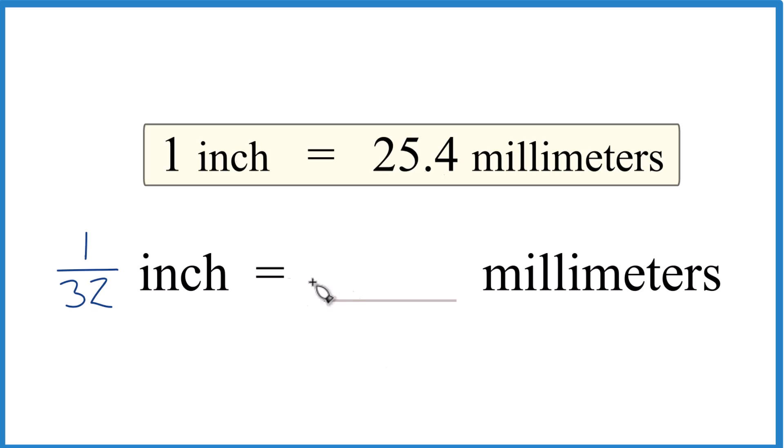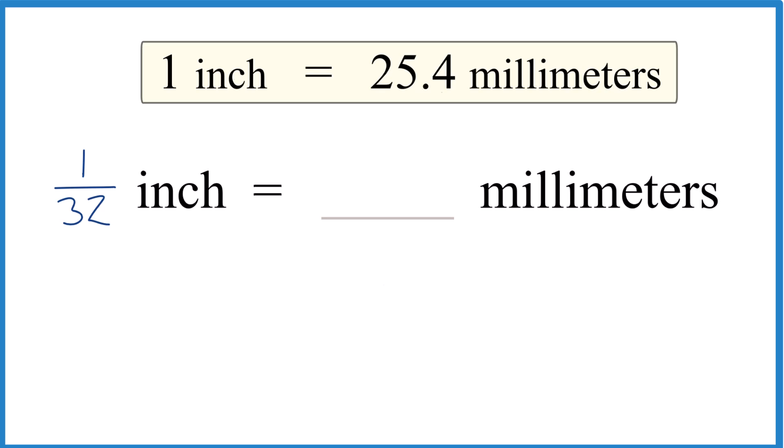But in this case, let's actually just do the conversion because we know 1 inch is 25.4 millimeters. So since this is 1/32 of an inch, it's really small, we're going to have an answer much smaller than 25.4 millimeters. So it turns out that 1 inch is 25.4 millimeters.